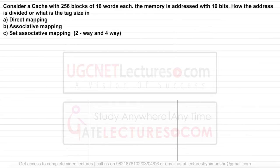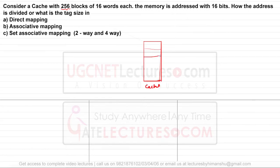They say: consider a cache with 256 blocks. I'm creating a diagram here so you can understand what I'm teaching. This represents the cache memory, and in this cache memory, the blocks are numbered 0, 1, 2, 3, up to 255 — so there are 256 blocks. The size of every block is 16 words.